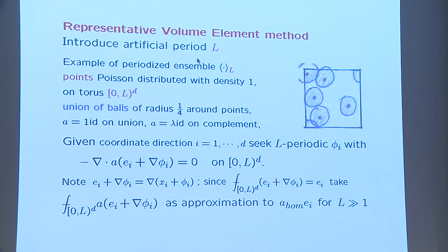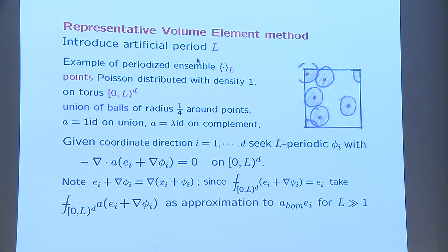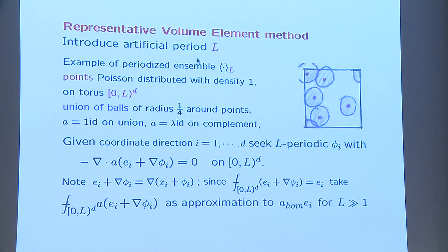How do engineers do this in practice? They artificially introduce some finite-sized domain — the simplest thing is to think of a torus: they introduce some box and identify boundaries. In this finite-sized region, they sample their medium according to the same specifications as in the whole space — so they look at the Poisson point process with the same density on the torus. Now you have sampled what you think is the right statistics, but not in all of space, but on the torus. Then they solve d linear partial differential equations on the torus, seeking a periodic function phi_i which solves the elliptic differential equation.